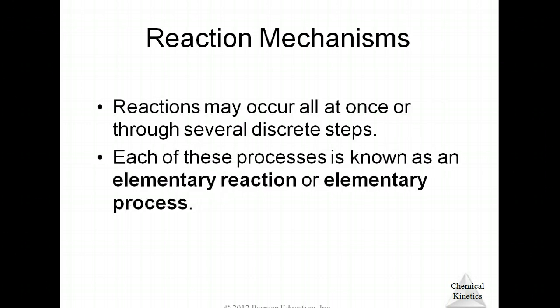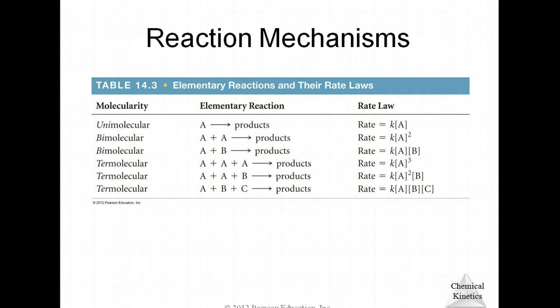Looking at this, it says it can all happen just as the equation tells us, or there may be some unseen steps in a reaction that we can't see and we have to determine experimentally or make some assumptions as far as what's happening. These are some ideas of what could be happening in a reaction.